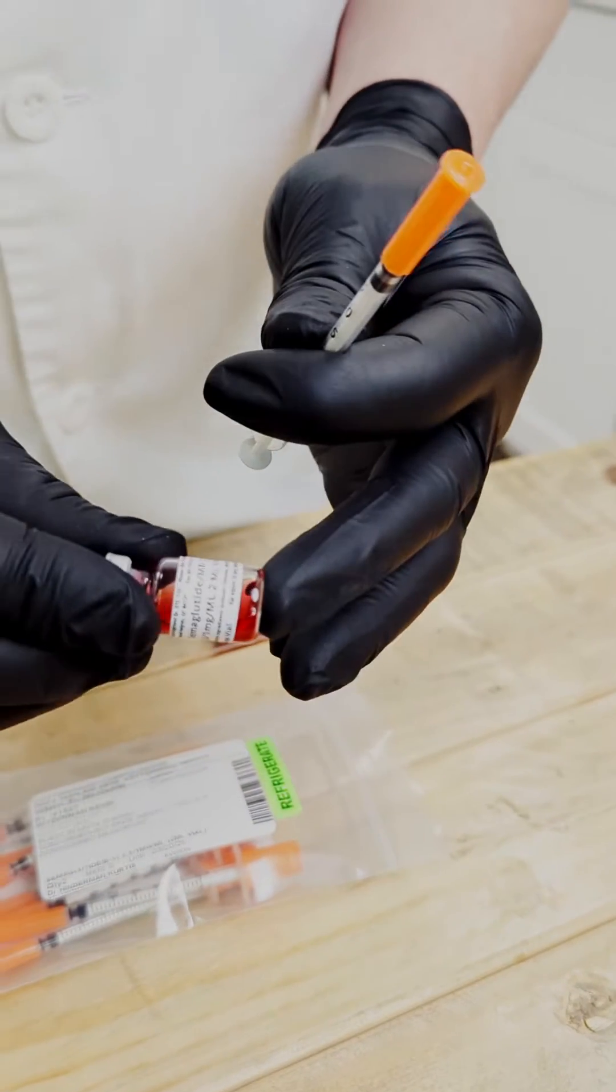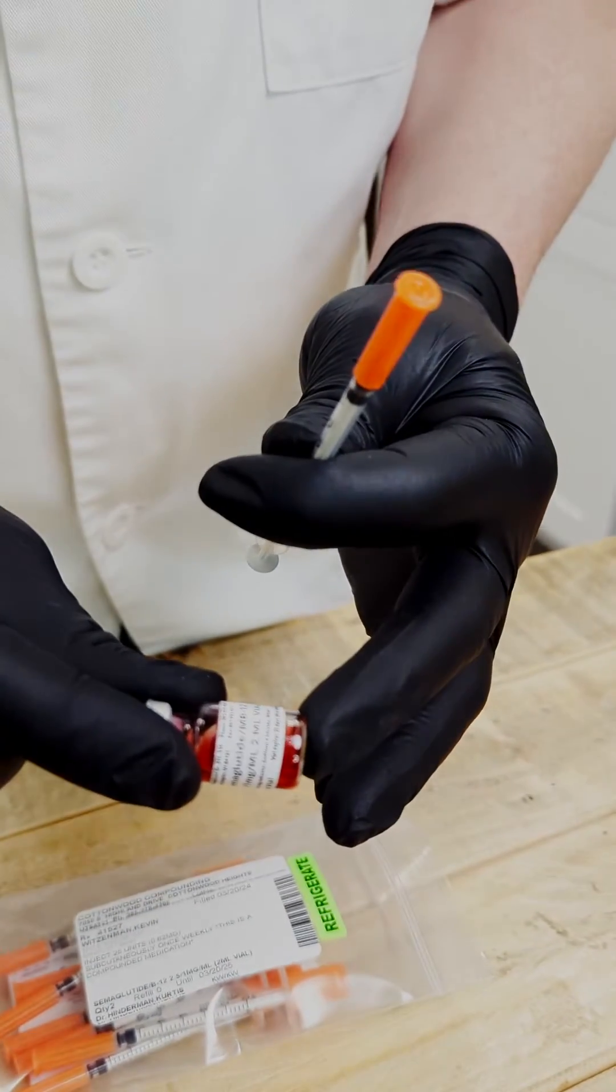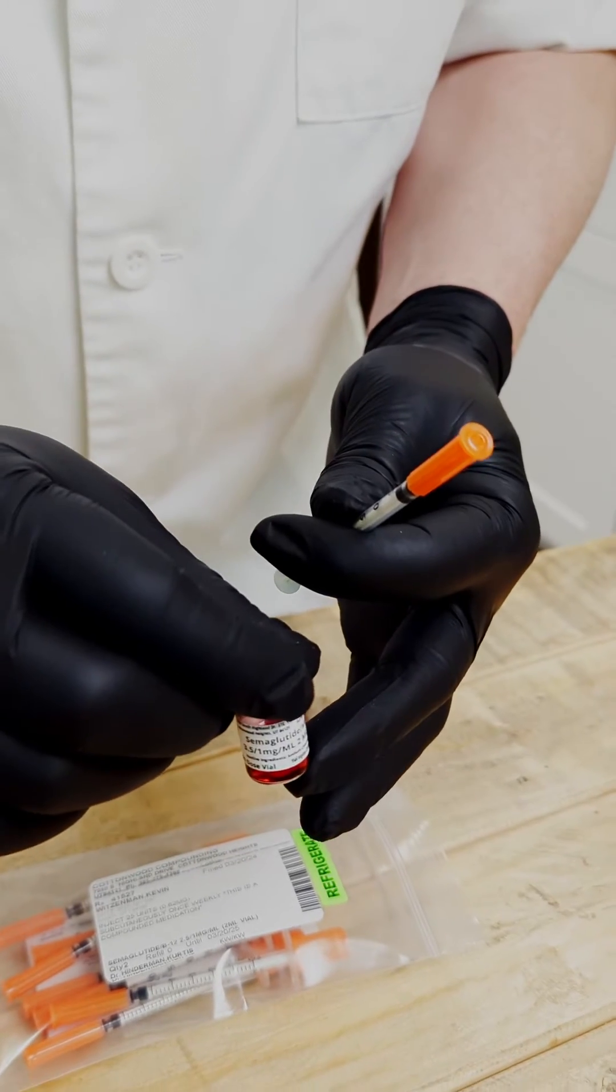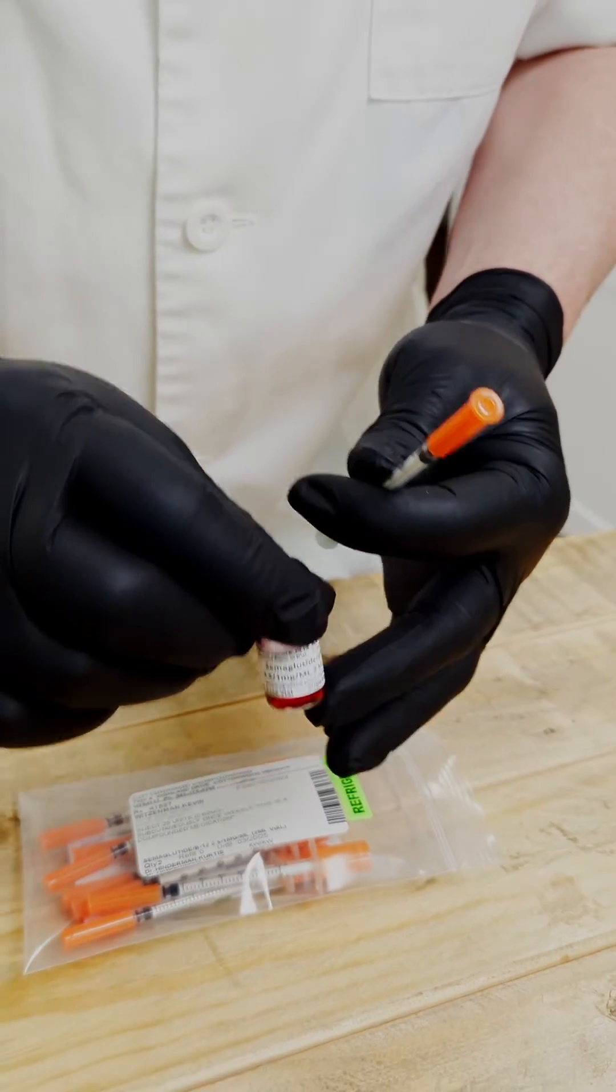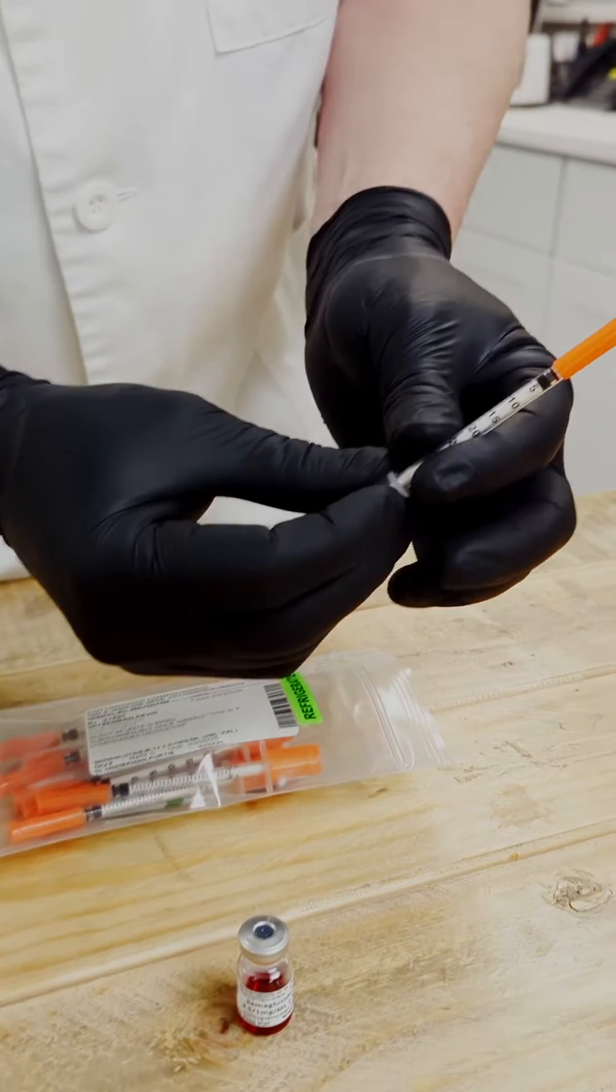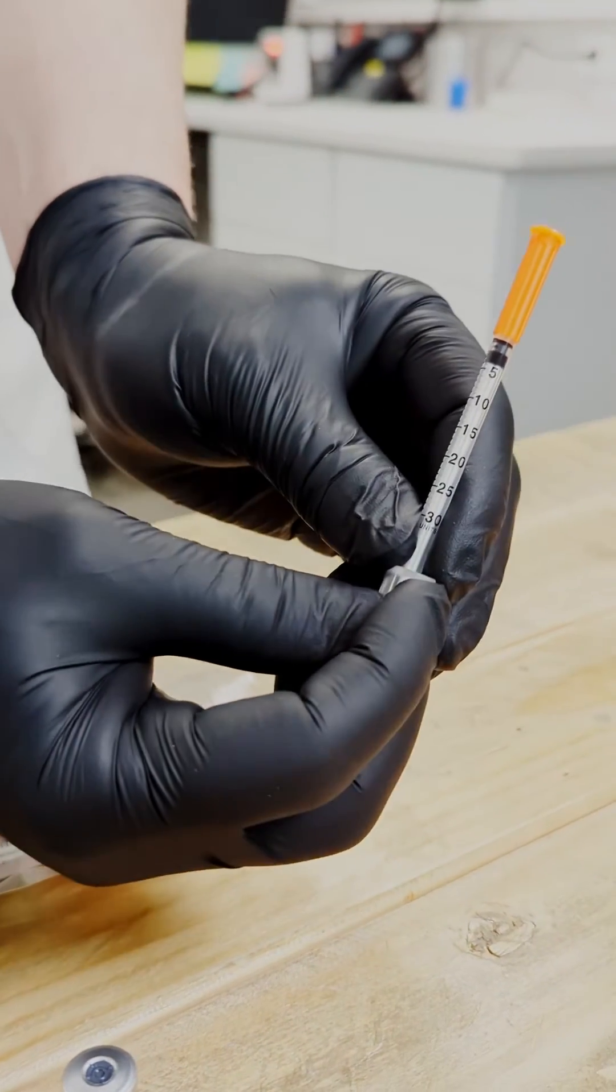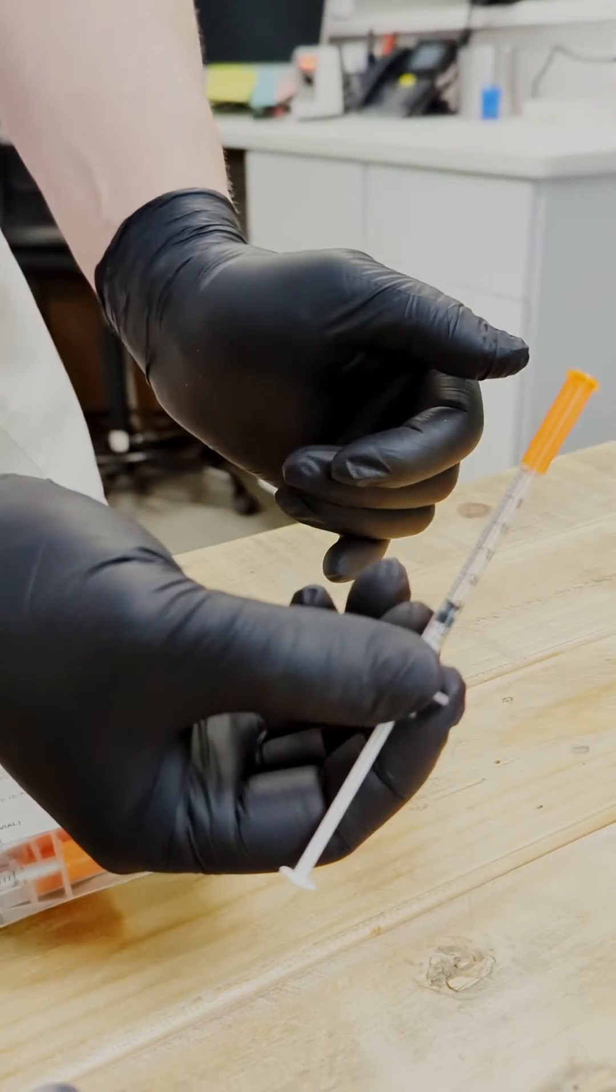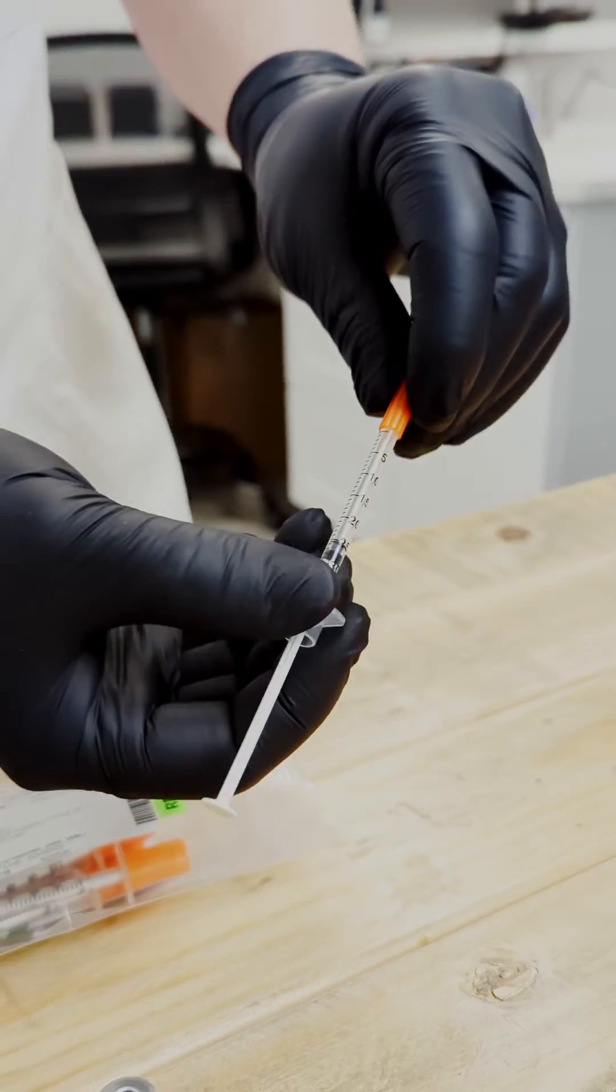If we are pulling 25 units out of this vial, we are going to want to put 25 units in to this vial to create that equilibrium. And we're going to do so by pulling air into the syringe. So we'll pull air up to 25 units. And it's a good double check on your dose as well.